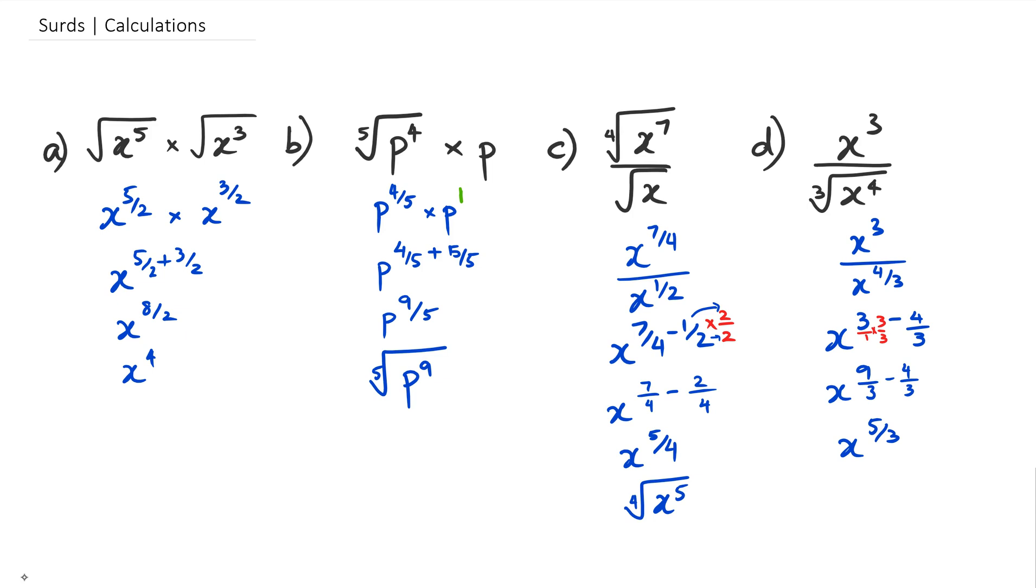And, of course, this could be written in surd form as well as x to the power of 5, and it ends up being the cube root. All right guys, that's basically it for surds calculations.